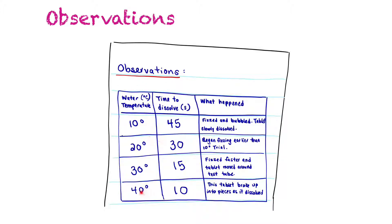In the table shown here, the first column is the water temperature — the independent variable — using 10, 20, 30, and 40 degrees. The second column is how long it took for the tablets to dissolve — those are the quantitative observations. For example, at 10 degrees it took 45 seconds. The final column is a description of what happened — the qualitative observations — such as: it fizzed, bubbled, and the tablet slowly disappeared.